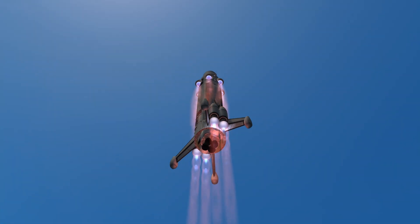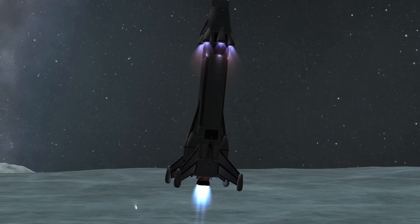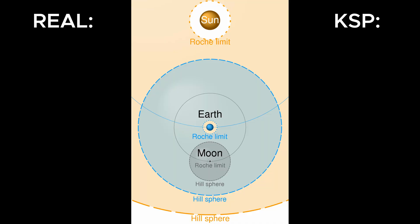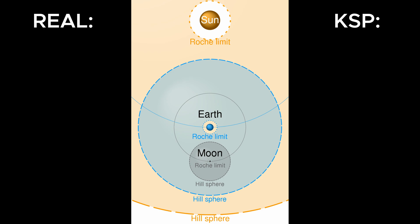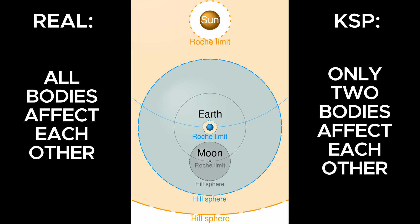Without becoming a real scientist, Kerbal Space Program is a rather simple game. For the sake of performance and simplicity, KSP is short-cutting the majority of orbital mechanics. Every single celestial body in KSP has a sphere of influence, which resembles gravitational spheres of influence as explained in real life. In KSP, once you are in a celestial body's sphere of influence, you are only affected by that one single body — whereas in real life, other celestial bodies still exert lesser gravitational pull. This alone makes for some interesting real-world interactions.